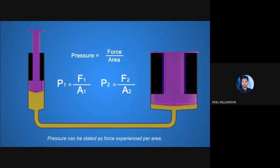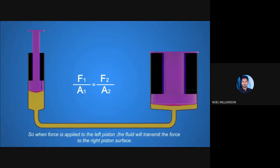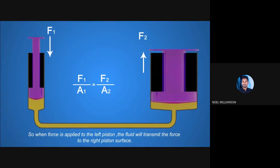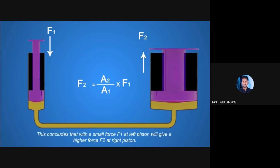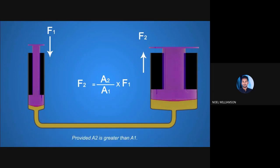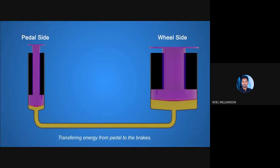Pressure is defined as force per area, so P1 = F1/A1 and P2 = F2/A2. According to Pascal's law, pressure on both pistons is equal, giving P1 = P2. So when force is applied to the left piston, the fluid transmits the force to the right piston surface as a factor of the ratio of the two piston surfaces. This means a small force F1 at the left piston gives a higher force F2 at the right piston, provided A2 is greater than A1. The left piston acts at the pedal side and the right piston acts at the wheel side, transferring energy from pedal to the brakes.